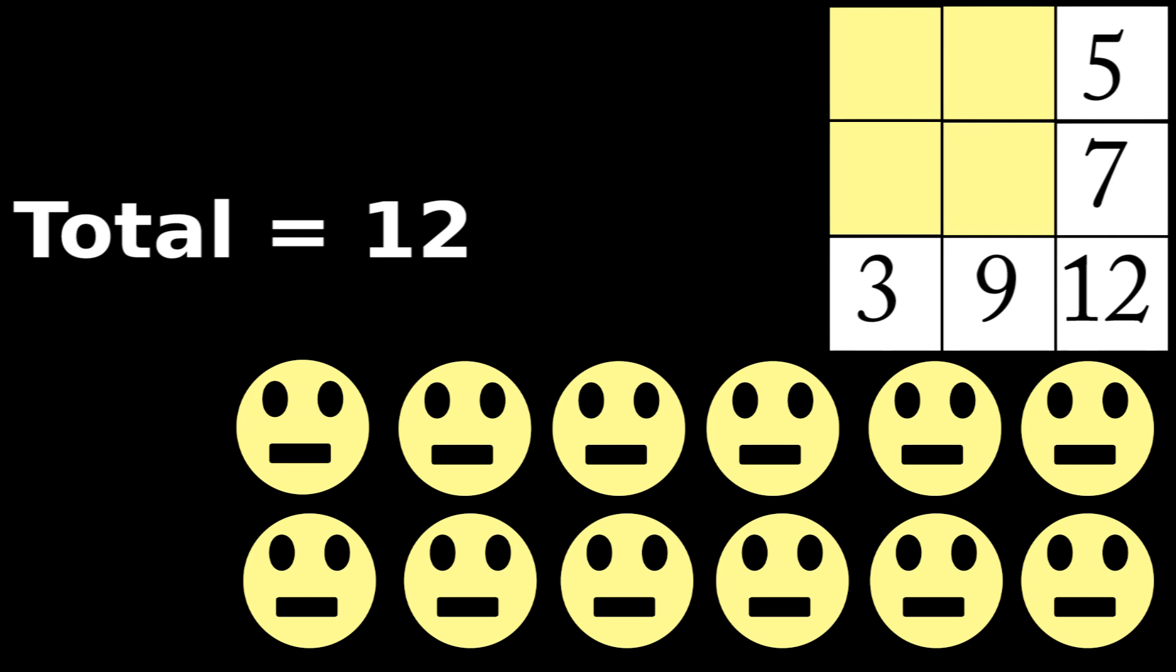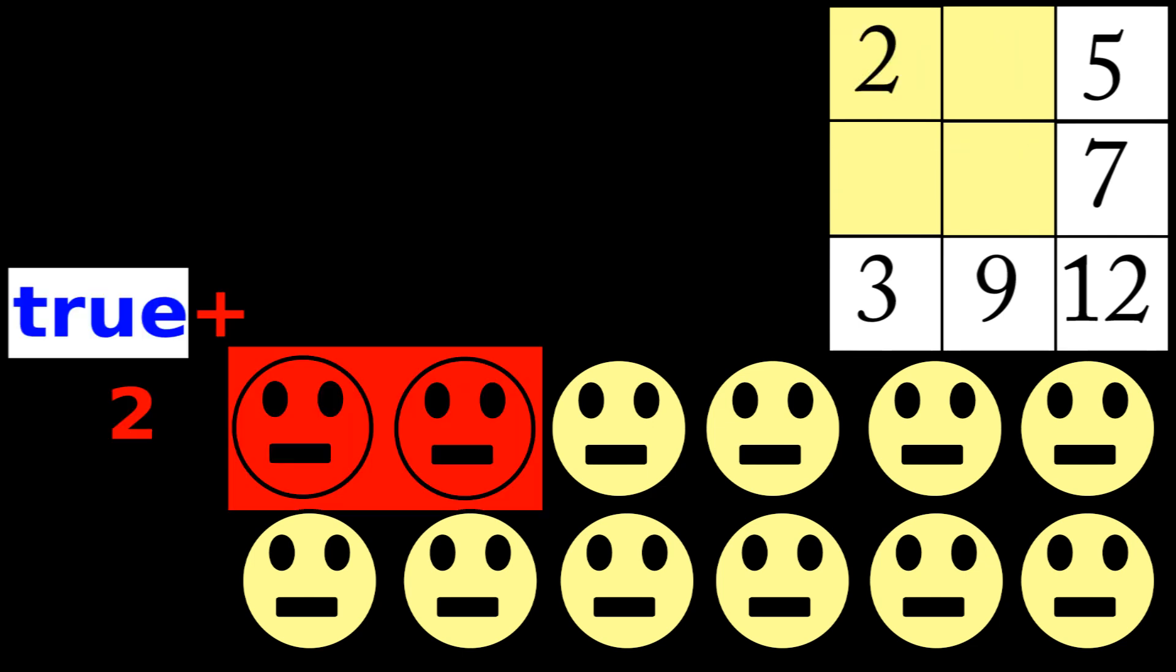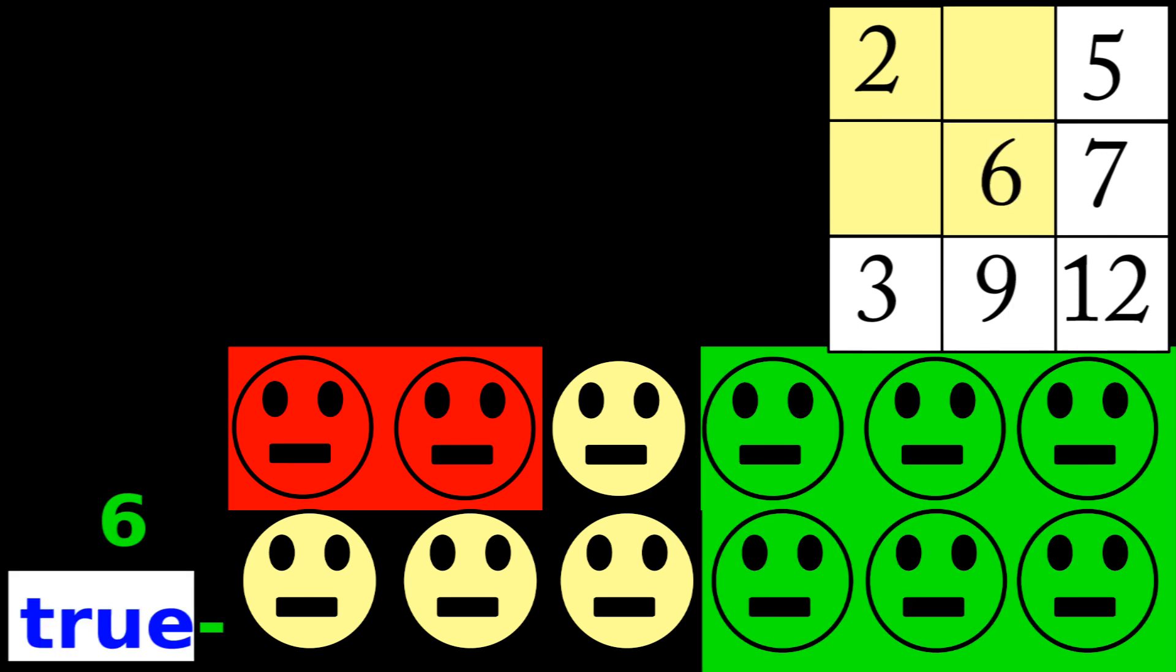The 2x2 chart comes from the overlap of false and true, positive and negative. 2 people definitely have AIDS. These are true positives. 6 people are definitely healthy. They are true negatives.